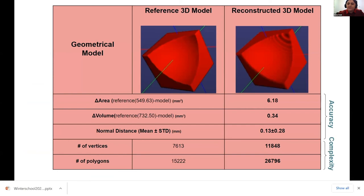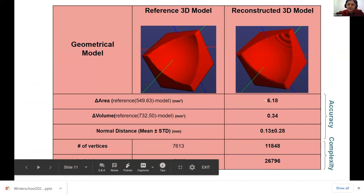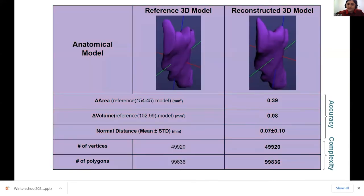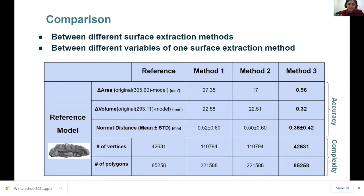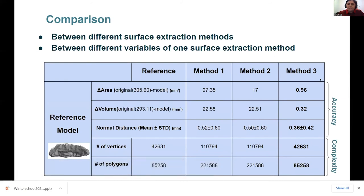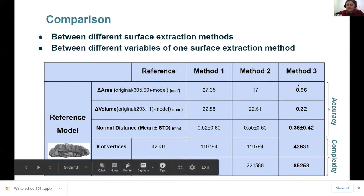Here I show the results of comparison between the reconstructed and different surfaces that I talked about before. As you see, there are differences between the areas and volume, and also we have normal distance between these two. This is the same procedure when we use the anatomical reference models and reconstruct with any method. And here I show that this benchmarking method can be used to compare between different surface extraction algorithms as well as different variables of one surface extraction algorithm. And here I show another anatomical reference model, and I have used A3D methods to reconstruct these. And as you see, one of the methods has given the best results in terms of accuracy.